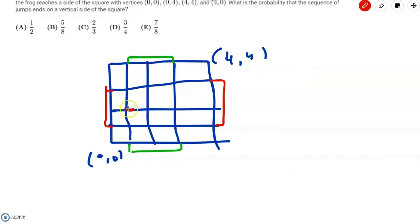Let's consider what the frog can do from the point (1,2). If he moves right, then he goes to the point (2,2), which is essentially the center of the square. Since it's the center of the square, the probability that he reaches a horizontal segment is obviously the same as the probability that he reaches a vertical segment. So the probability over here is equal to one half.